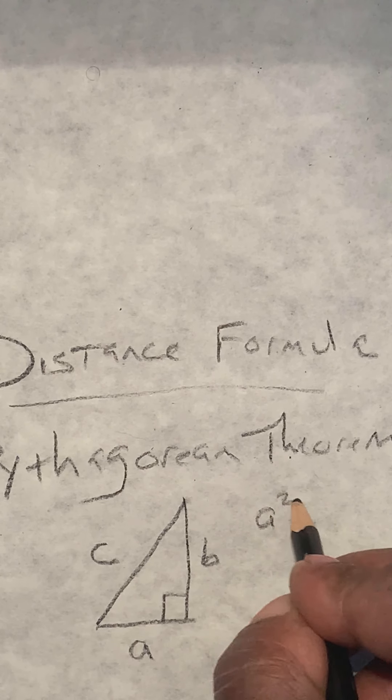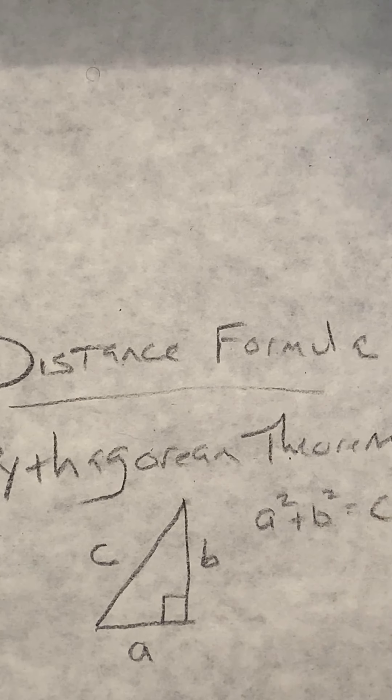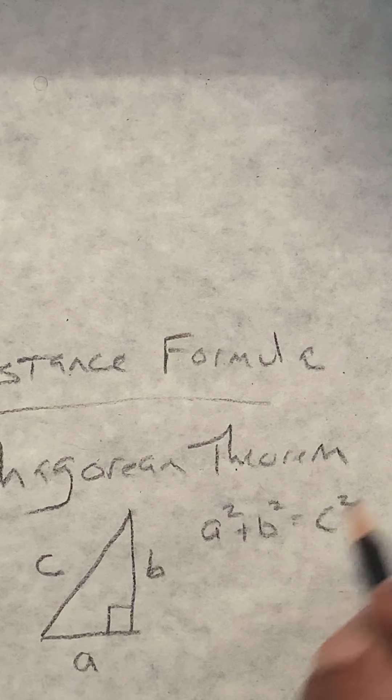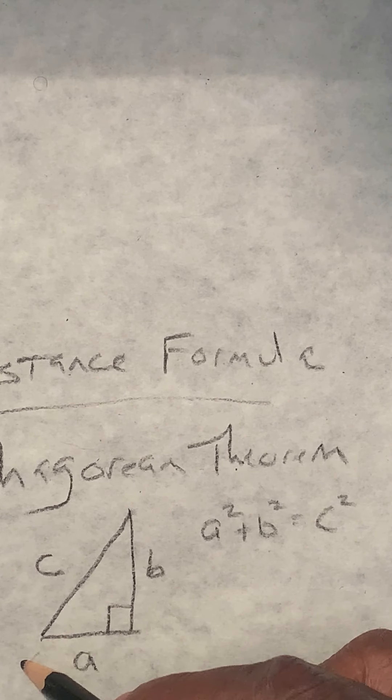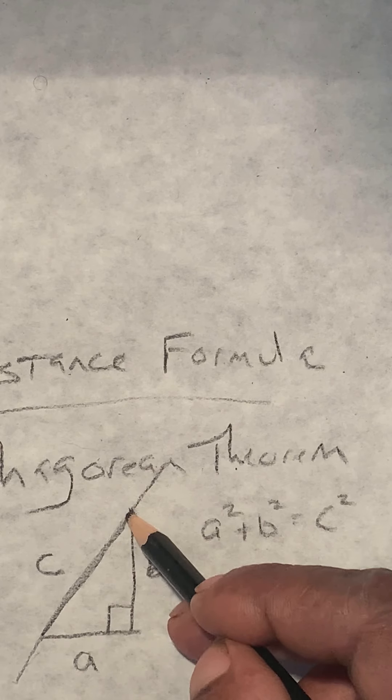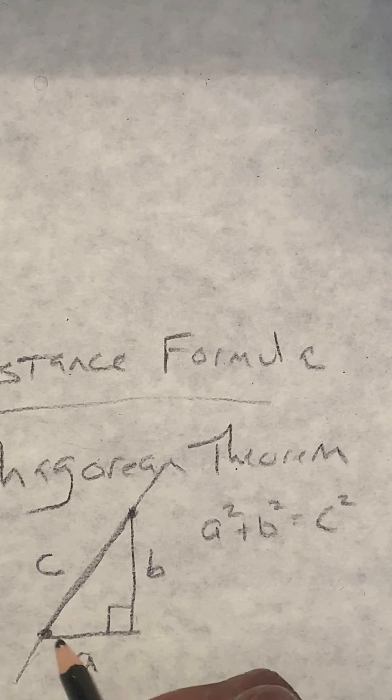If you square the first side, add it to the square of the second side, it'll equal the square on the third side. So we're going to use that idea. If you notice, this is like a line. And this is one point on the line. Here's another point on the line. This is your up factor, and this is your right factor. So it's B over A.